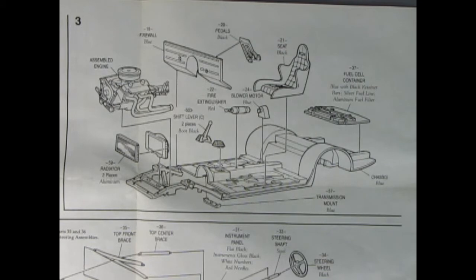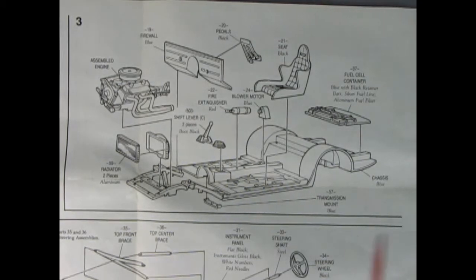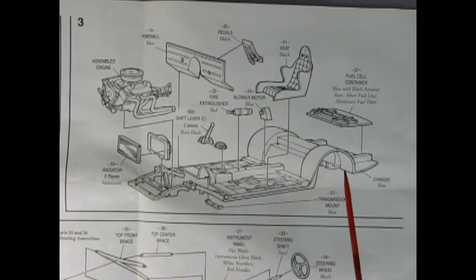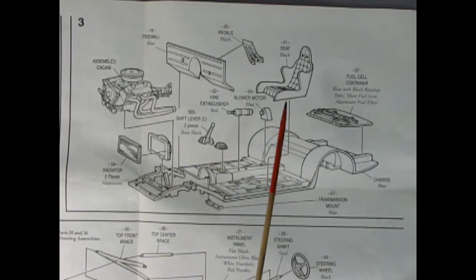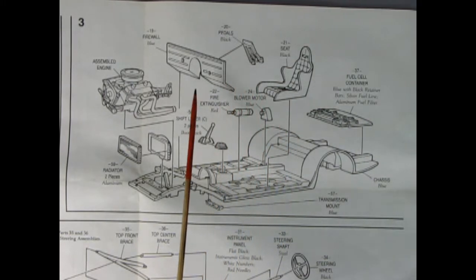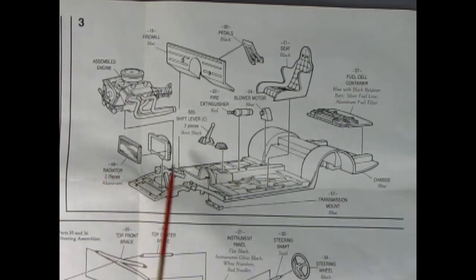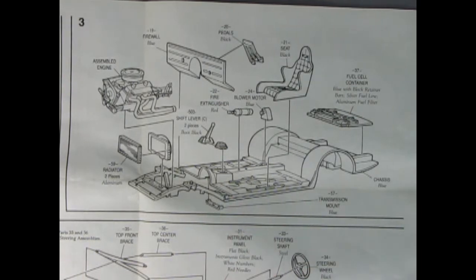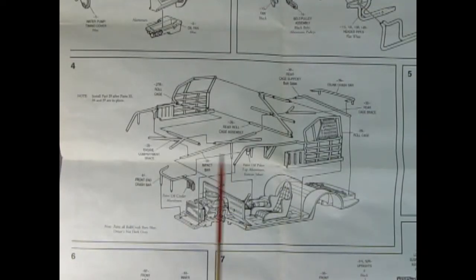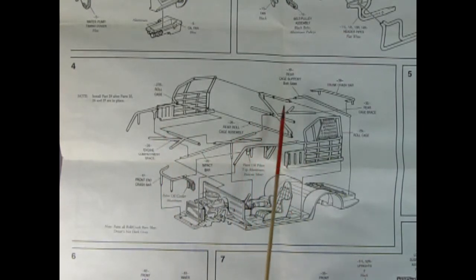Panel 3 shows our super detailed NASCAR interior going together. We've got our fuel cell which glues into the back of the chassis, our front seat, our pedals, the firewall, the engine will drop in place, we've got a two-piece radiator, two-piece shift lever, fire extinguisher and a blower motor. What will they think of next? Look at all the pieces you get in panel 4. There's our roll cage with the left and right hand side. Look at all the braces in here. I can't even see these properly. There's so many braces.